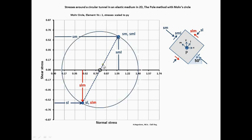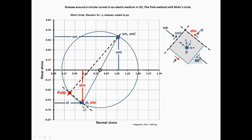Draw a parallel line to the element's plane at which the stresses S-M and S-M-L are acting, through the corresponding stress point. The intersection of this line with Mohr's circle represents the pole. Draw a parallel line to the element's plane at which the stresses S-L and S-L-M are acting through the corresponding stress point. The intersection of this line with Mohr's circle must be the pole as well. Since a rectangular infinitesimal element is used, the pole must lie on a tail circle.